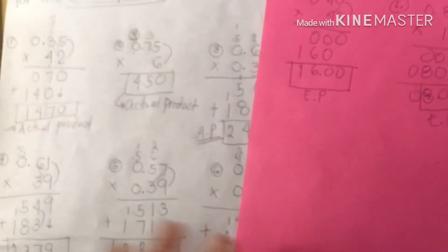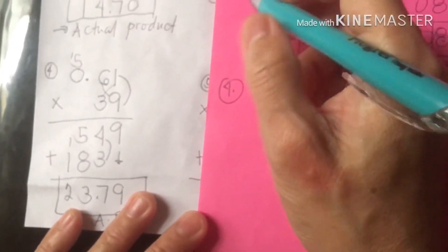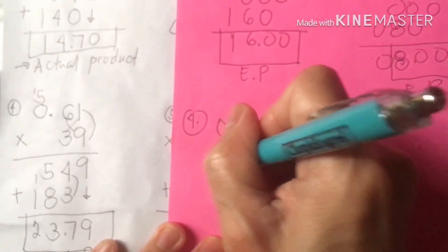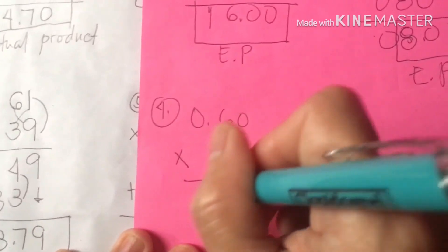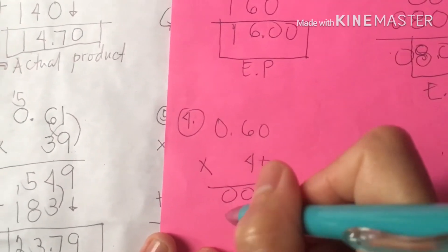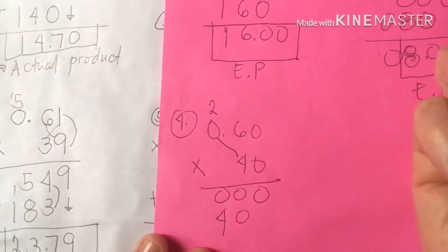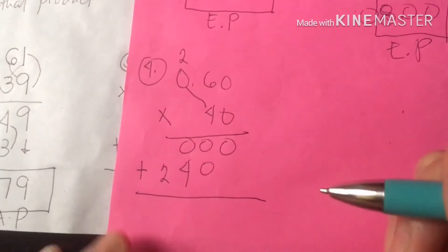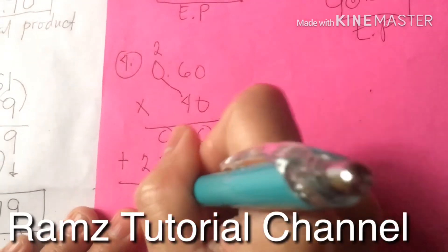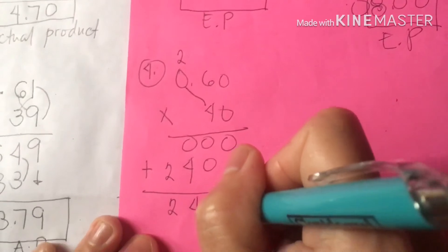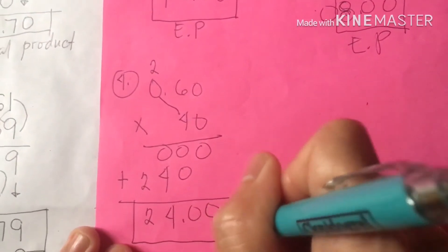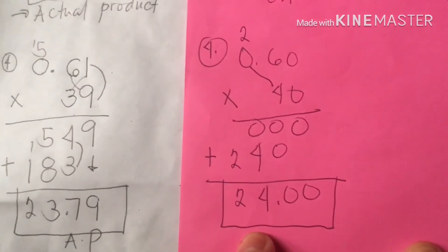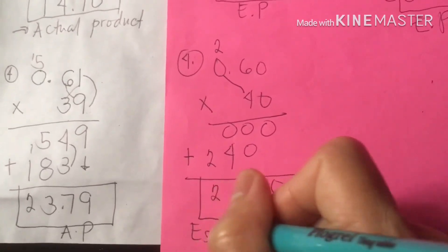Number 4: estimating product is 60 times 40. Counting the zeros and multiplying: 6 times 4 is 24, regroup 2. Sum up: 0, 0, 4, and 2. Counting the decimal places, our actual product is 23.79 and our estimating product is 24. That's exactly correct — very exciting! This is absolutely correct class.